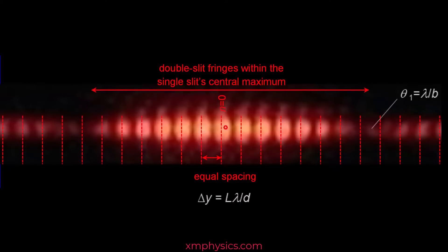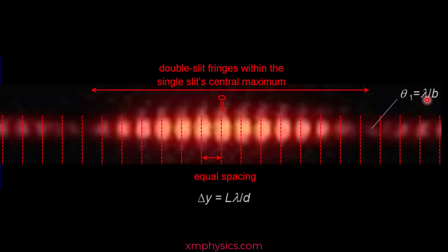If you are doing a calculation based on fringe separation, you'll be using Δy = Lλ/d, where d is the slit separation. If you are trying to calculate the angle at which you have the missing fringes, you'll be using the single slit formula: the first minimum angle equals λ/b, where b is the slit width.